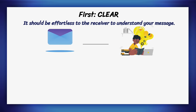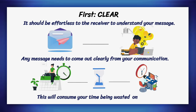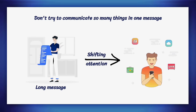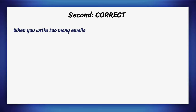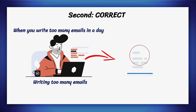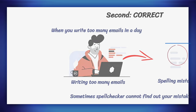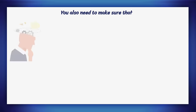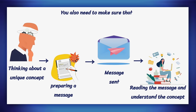First, clear. It should be effortless for the receiver to understand your message. Any message needs to come out clearly from your communication, as this will save time wasted on emails. Don't communicate too many things in one message, because it will dilute the attention of the reader. Second, correct. When you write too many emails in a day, it increases the chances of spelling mistakes. Sometimes spellchecker cannot find your mistakes. You need to be sure that you address people in the right manner and spell their names correctly, and that your reader has sufficient knowledge to understand the technical terms you use.